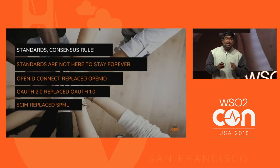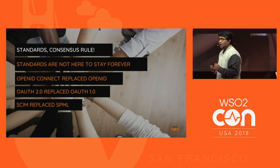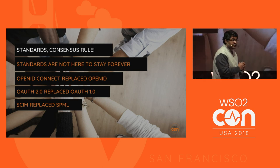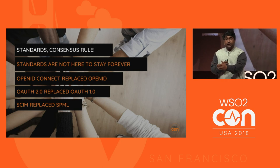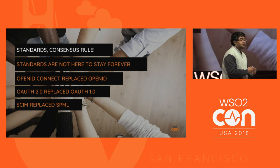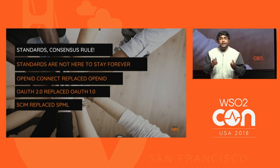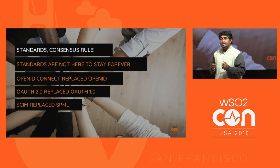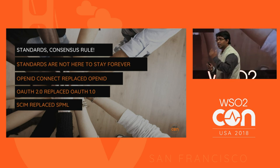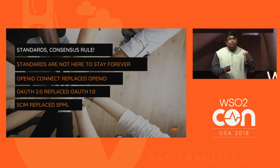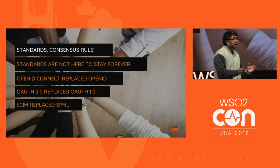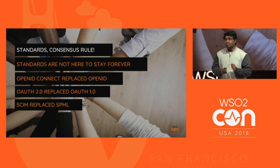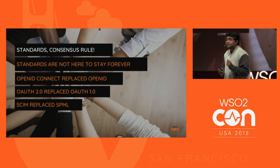Having standards and consensus is important — standards help you build interoperability and best practices. But standards are not here to stay forever. OpenID Connect replaced OpenID; OAuth 2 replaced OAuth 1.0; SCIM replaced SPML. If the community feels that adhering to a standard is overkill or will block their growth, they will deviate, build their own rules, and over time, with community consensus, those new rules become standards. That's how things evolved in the past, and that's what will repeat in the future.